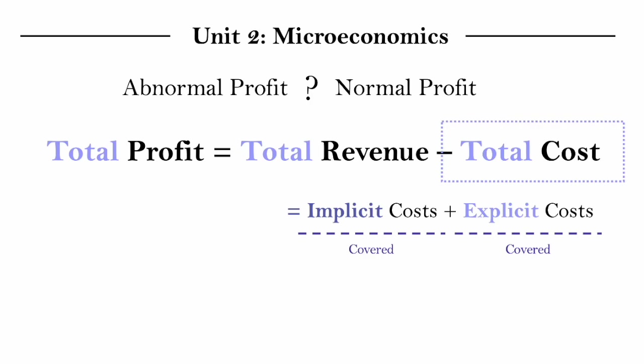And when total profit is zero, we say a firm is making normal profit, because they have just about covered both their monetary expenses of explicit costs, as well as that cost of remaining in this business, that implicit opportunity cost. So their profit is normal, the minimum amount that justifies why they would continue producing in this situation.